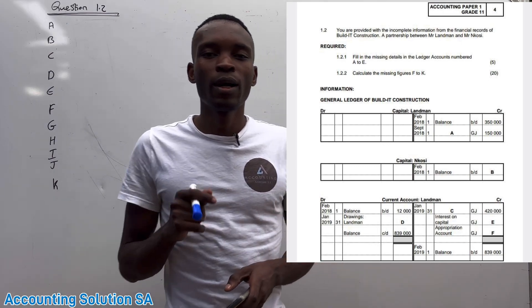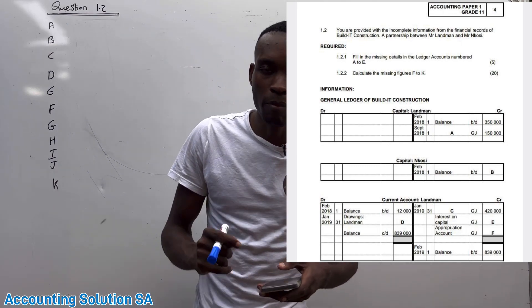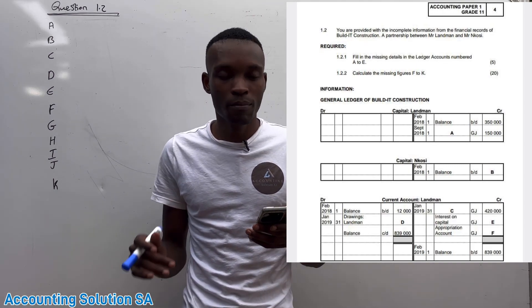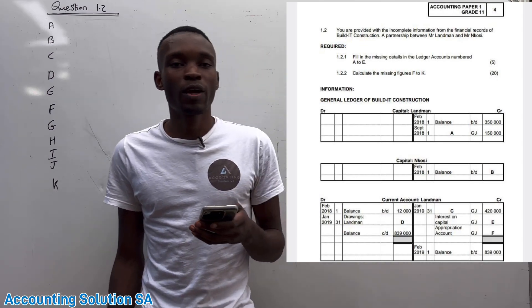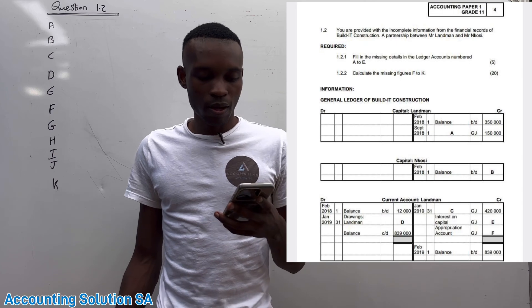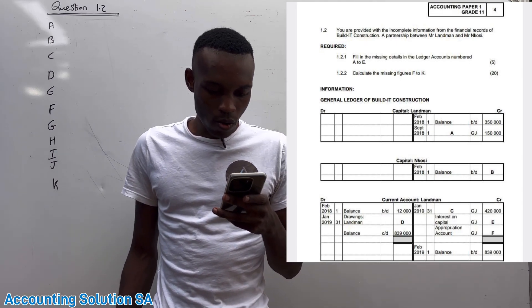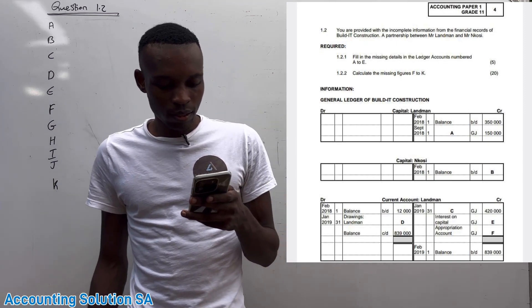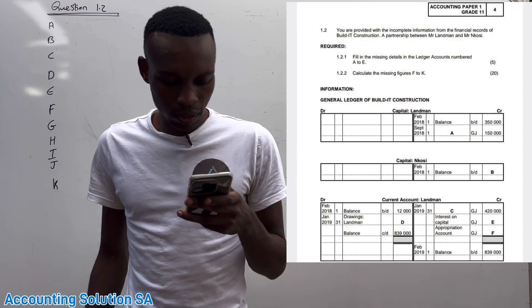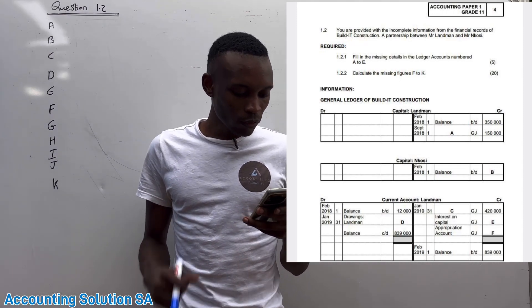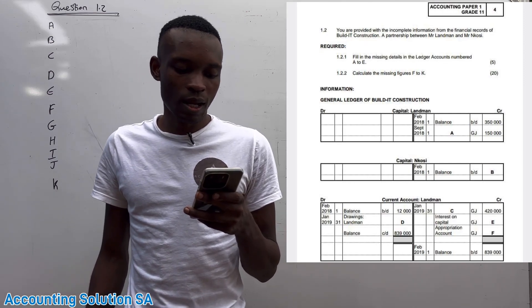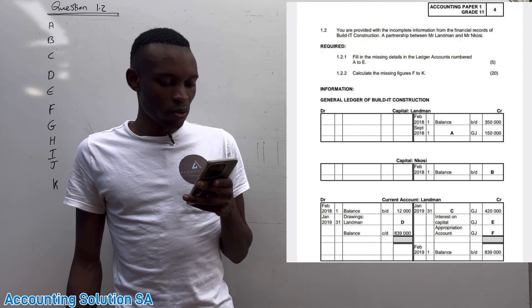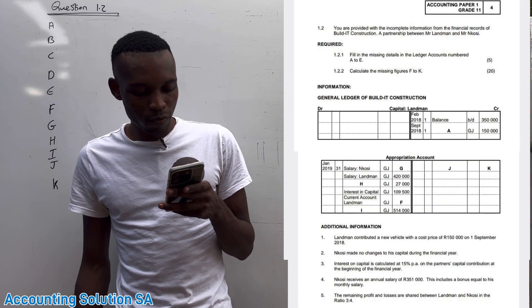In this video we are going to continue with a partnership. I picked one of the previous question guides so that we can do some transactions that you are going to find when you are preparing for examination. Now we have a ledger account that we are given - which is capital - and they also give us a current account for one partner and they also give us an appropriation account and some transactions.